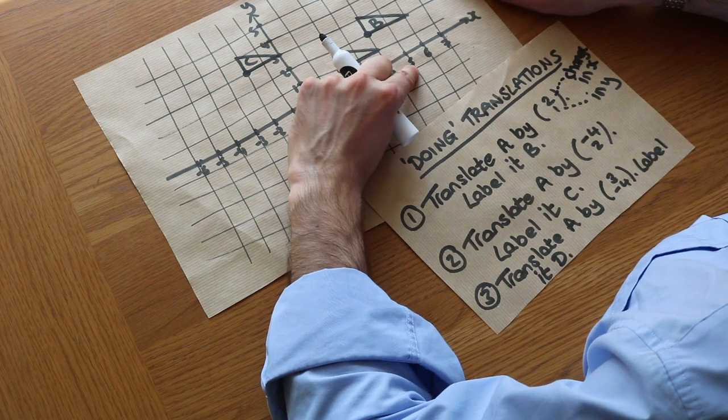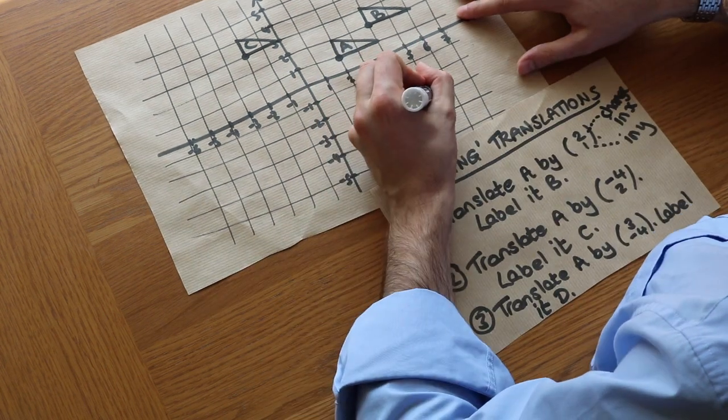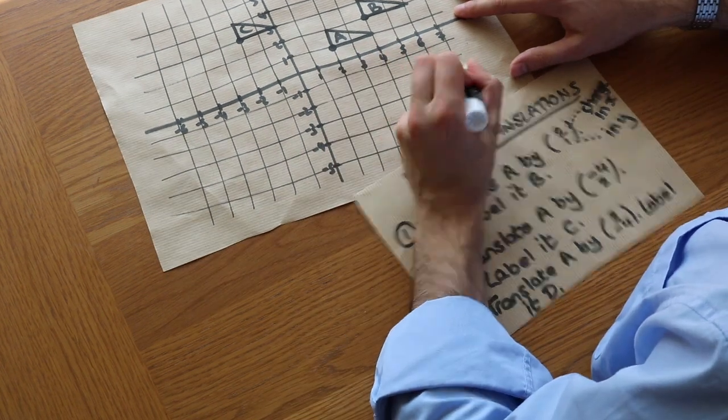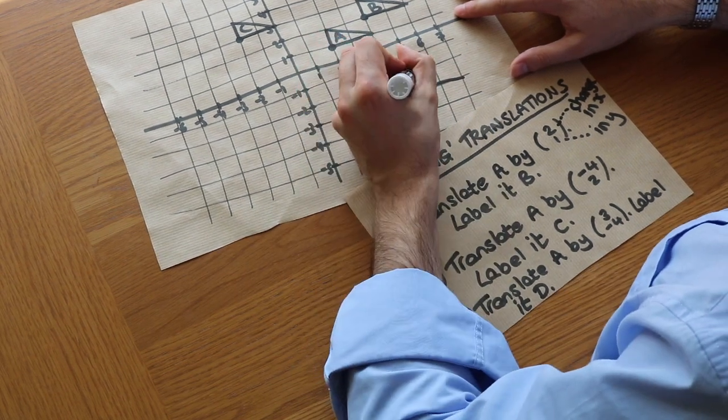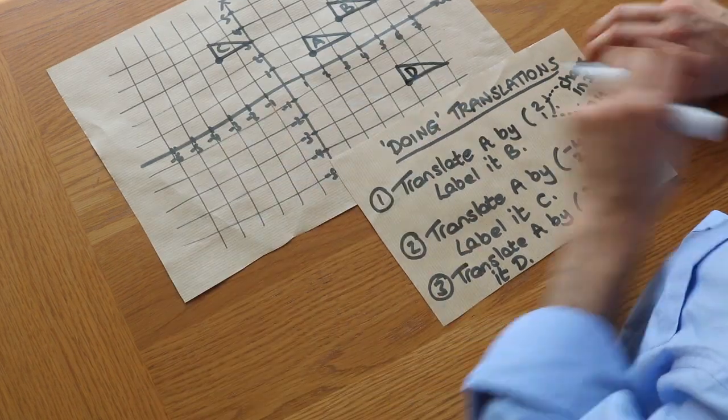So decrease of 4. 1, 2, 3, 4. So it's here. And then if we just draw that shape from that point, so going right, then up, and then like that, and we label it D. And that is it.